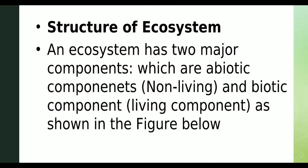The structure of the ecosystem has main components: abiotic components and biotic components. Abiotic refers to non-living elements; biotic refers to living components. Abiotic components include soil, water, sunlight, and minerals. Biotic components include plants and animals.